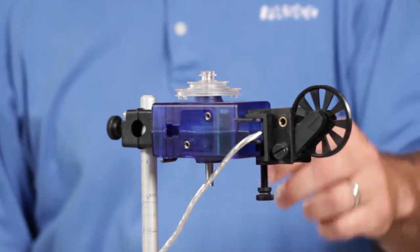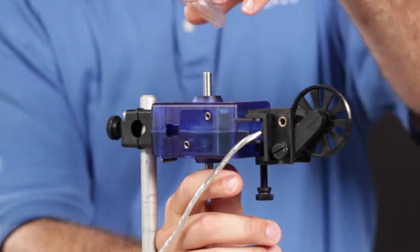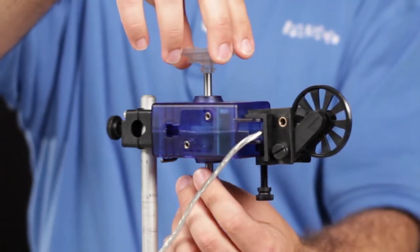To mount the rod to the Rotary Motion Sensor, orient the 3-step pulley so the large diameter step is away from the sensor case.